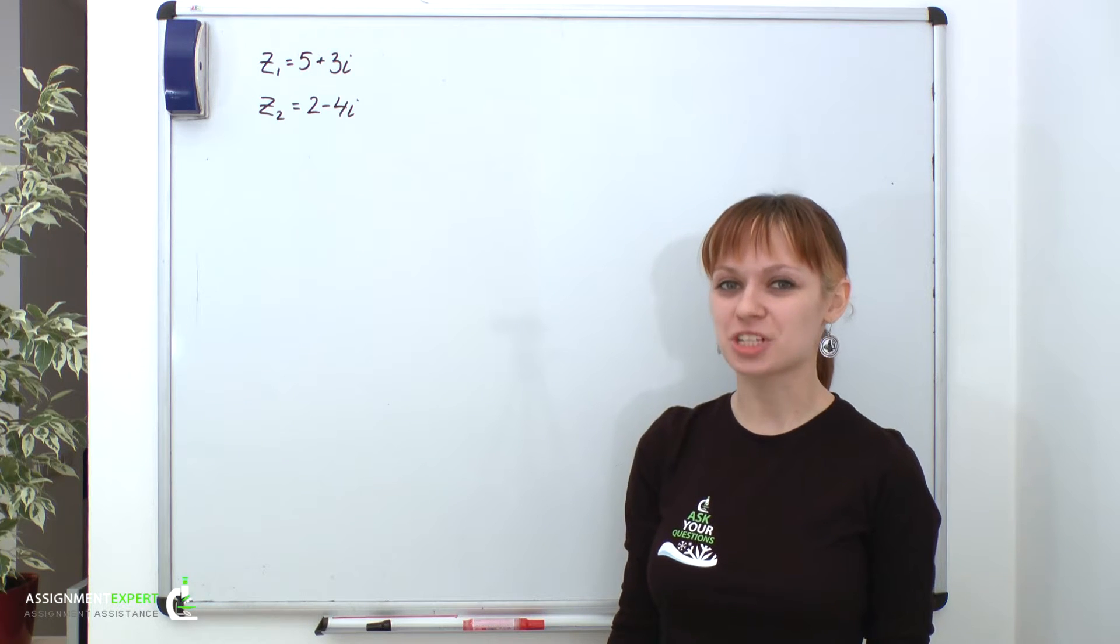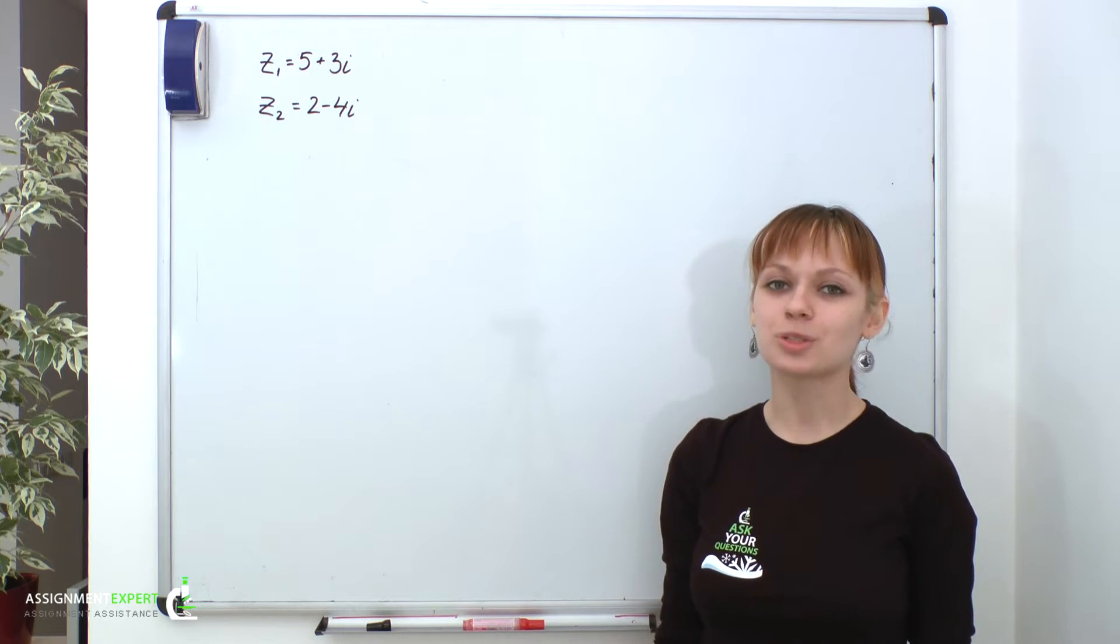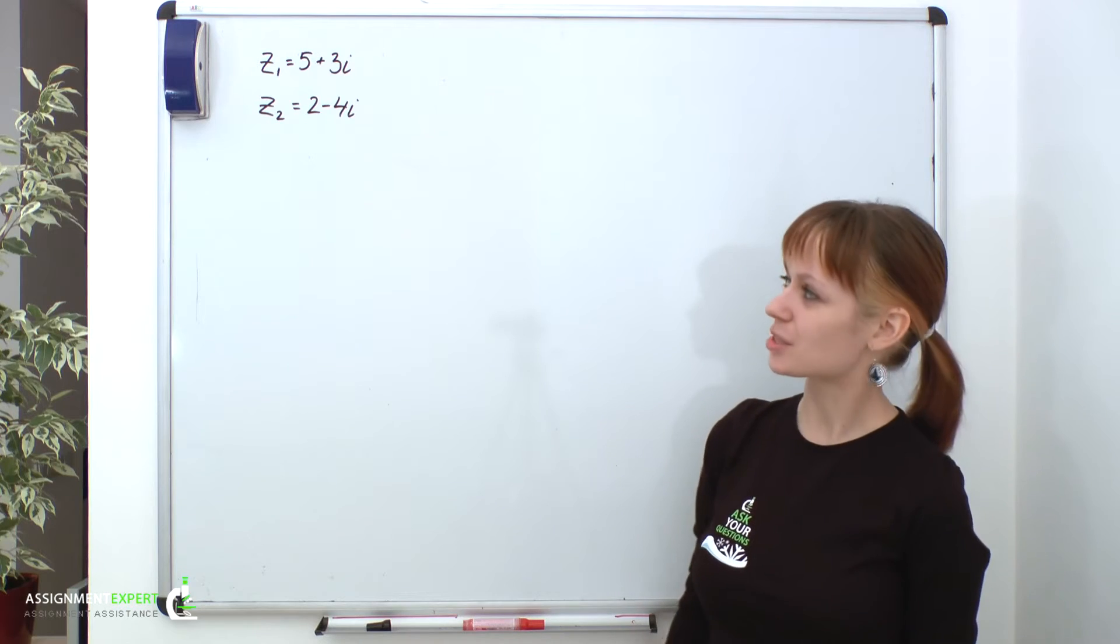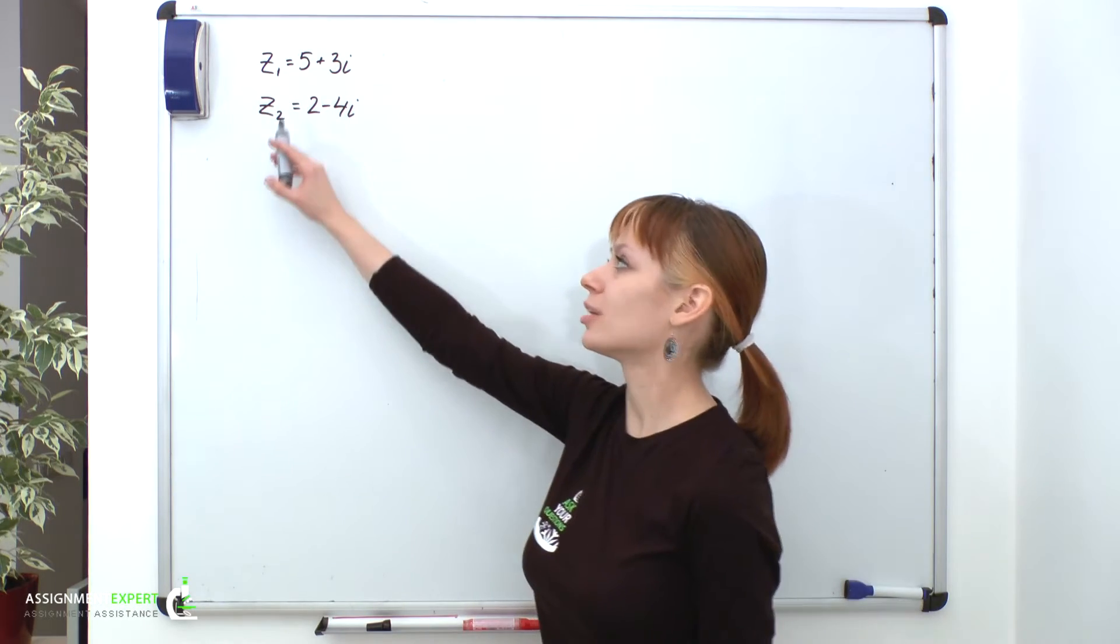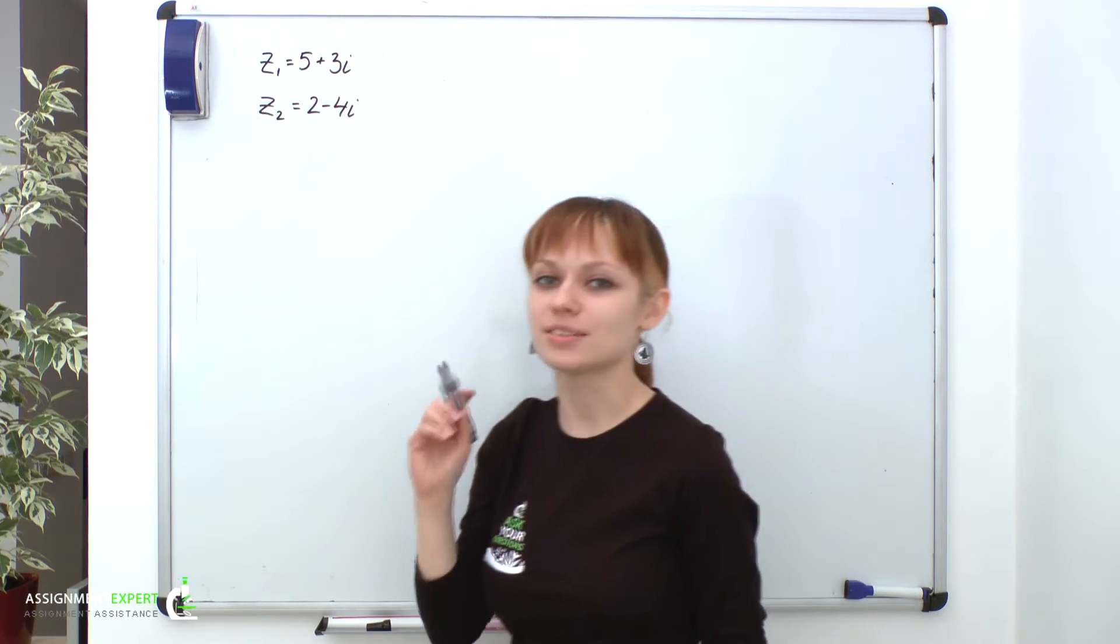In this episode, we'll consider operations with complex numbers. And we'll start with addition. So, suppose we have two complex numbers, Z1 and Z2, and we want to add them.